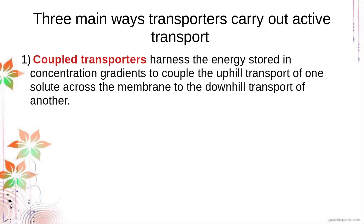We have a concentration gradient of solute 1 and we want to actively transport solute 2 — these are different solutes. Solute 1 has a concentration gradient; for example, the gradient is greater outside and smaller inside, so the tendency is for solute 1 to pass through the cell. For a coupled transporter, it follows the concentration gradient of solute 1 while simultaneously transporting solute 2 against the concentration gradient.